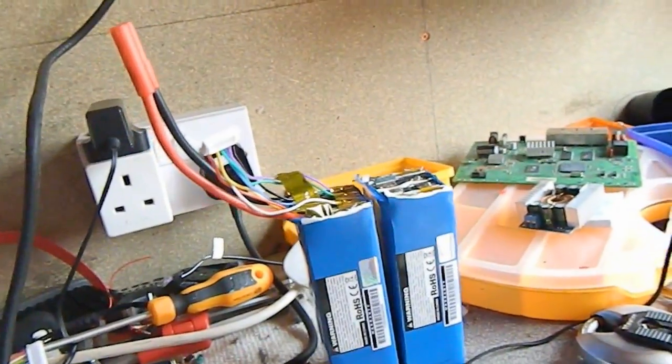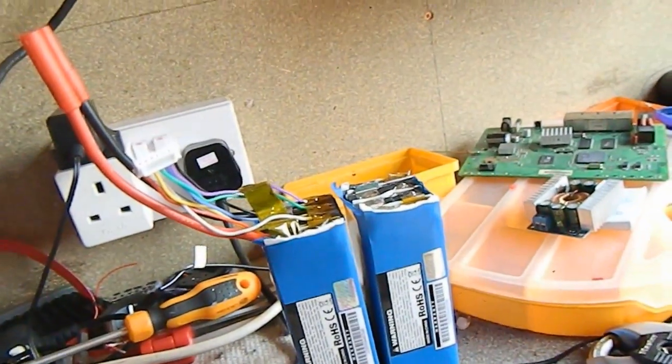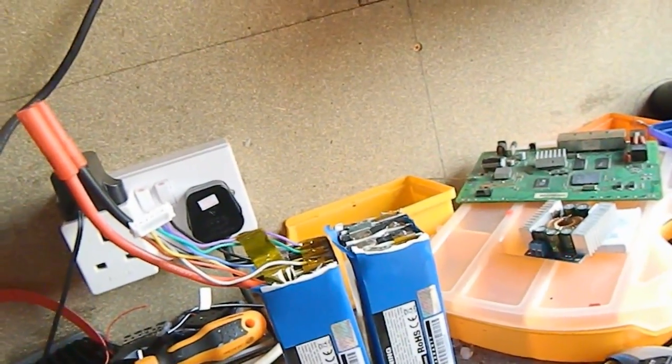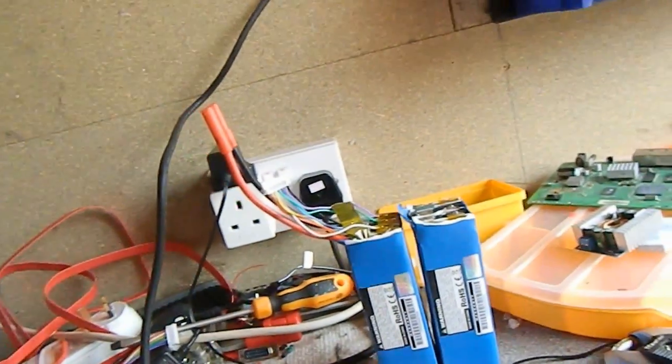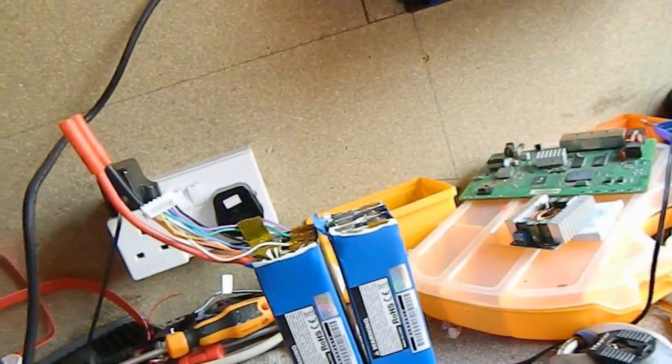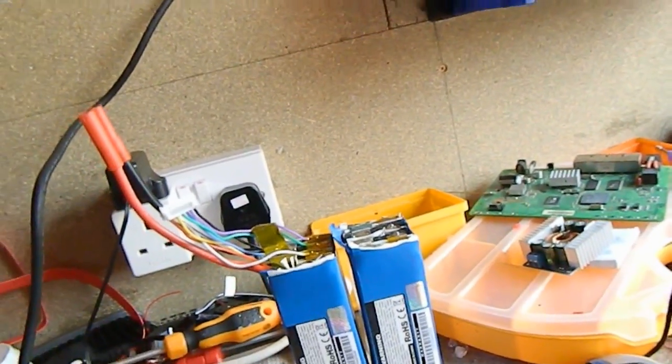The cells all arrived from Hobby King and they were all pretty unbalanced but the lowest cell I did see was 3.75. They're usually meant to be about 3.8 when you receive them but that's not too bad.